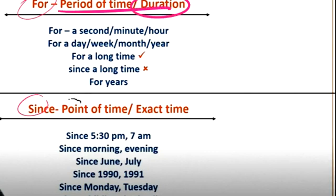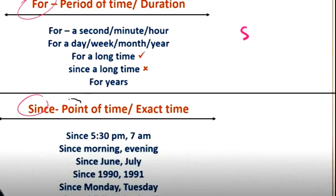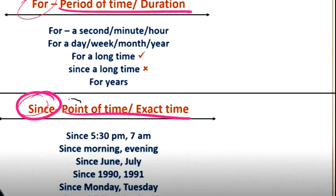Now we use 'for' for duration. For shows a period of time. For example, a period in school was one hour.